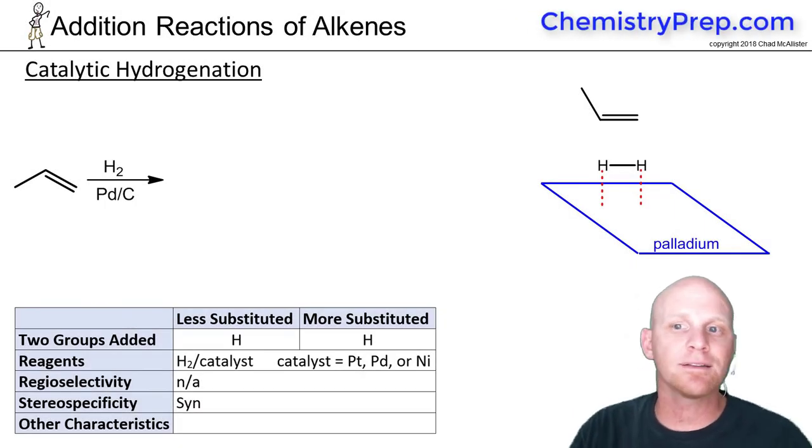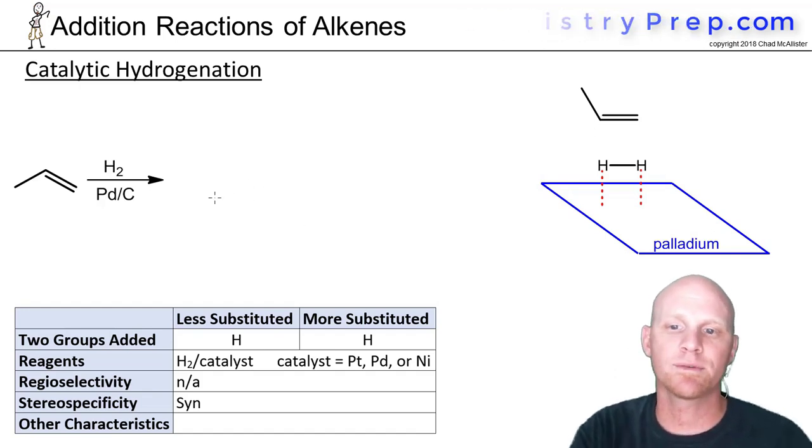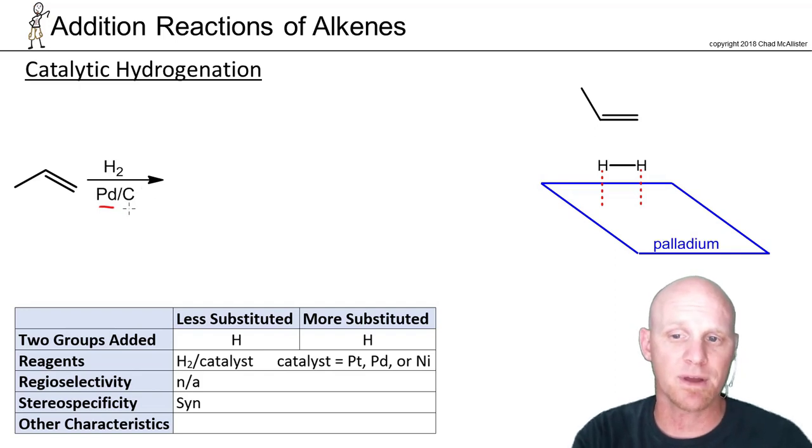The next alkene addition reaction here is called catalytic hydrogenation. So it turns out we can add hydrogen across the alkene, but only in the presence of a catalyst. The one I'm choosing here is the most common one I've seen, palladium, and sometimes we say palladium on carbon or palladium on charcoal.